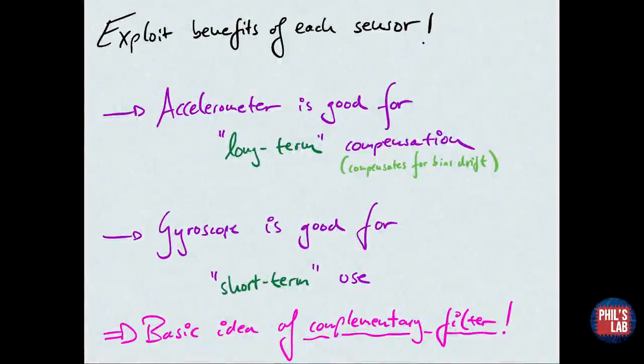Now we want to know how we can combine these measurements to improve our roll and pitch estimates. Remember, roll was denoted by the Greek letter phi and pitch by theta. Instead of focusing on the problems of each sensor, we'll try to exploit the benefits. The accelerometer is good for long-term compensation to null the gyroscope bias drift. On the other hand, the gyroscope is pretty good for short-term use. The idea is to merge these two benefits, and that gives us the complementary filter.